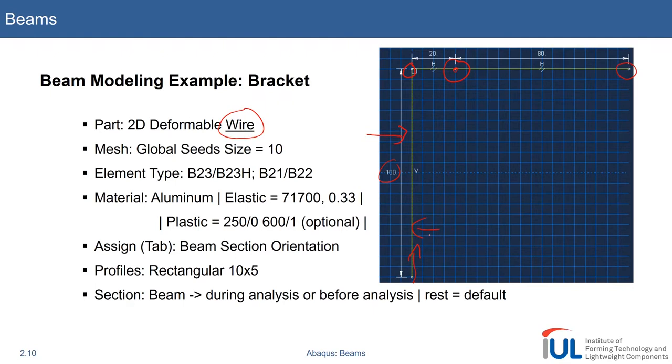Whenever you want to apply loads, boundary conditions, whatever type, at a particular point, at such a feature point. We'll use a global seed size of 10, that will yield 10 elements in the height and in the width of this bracket.